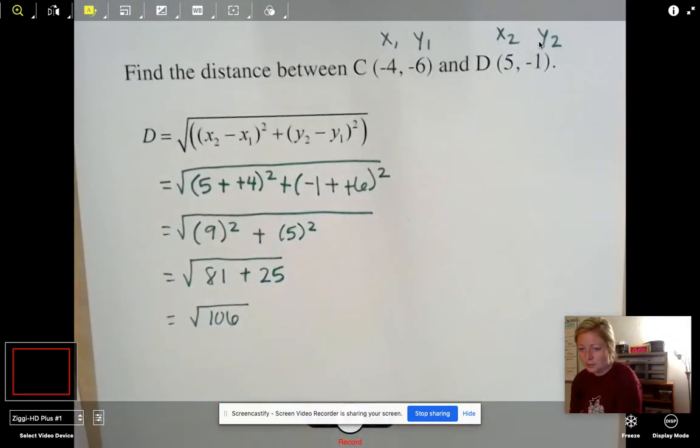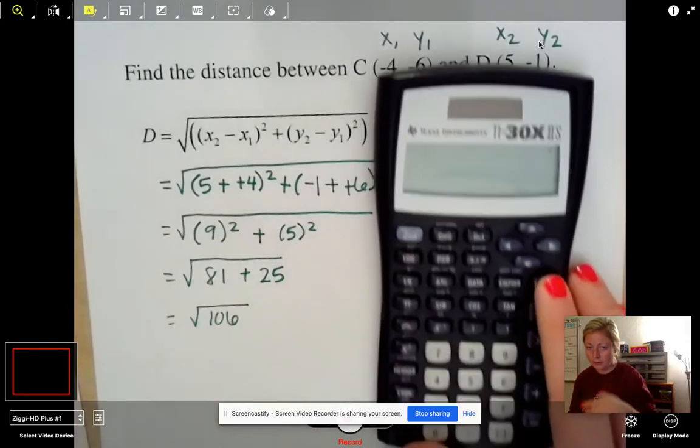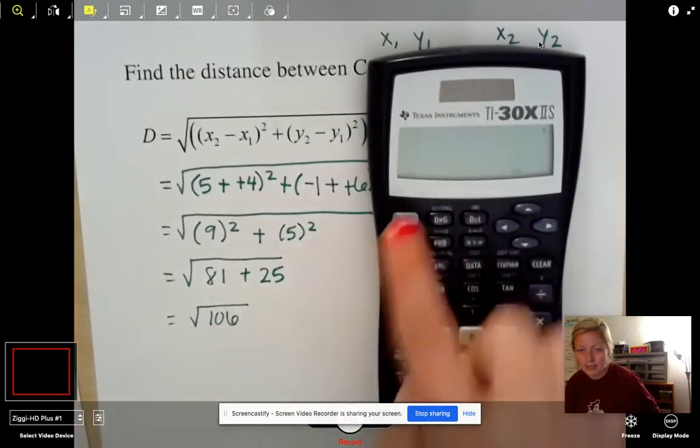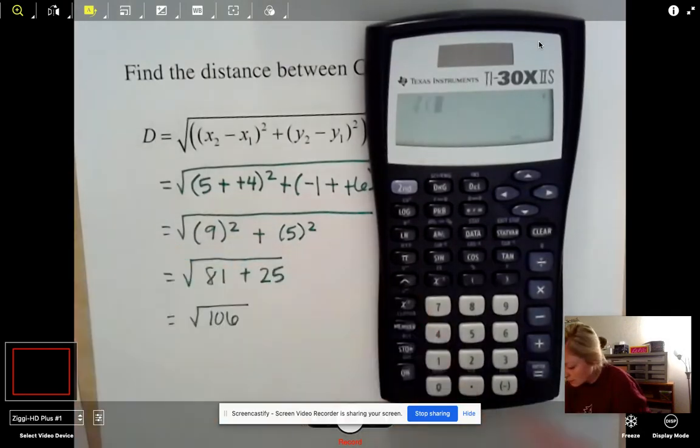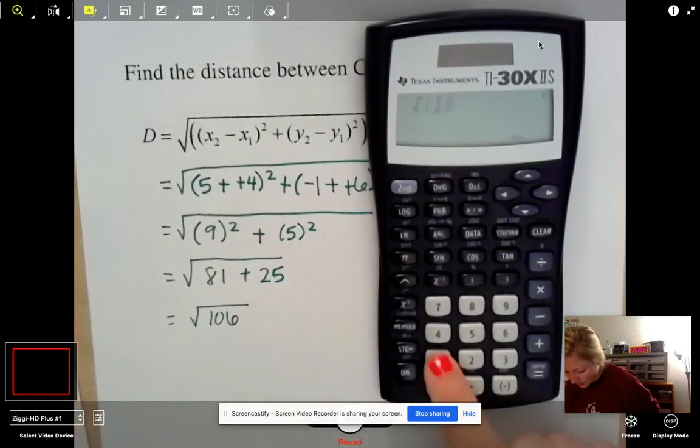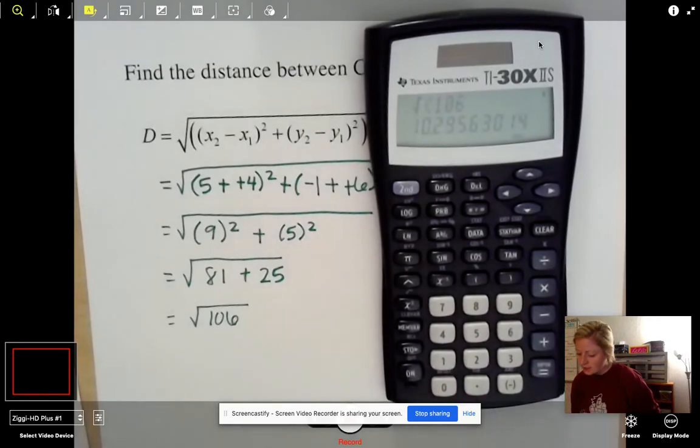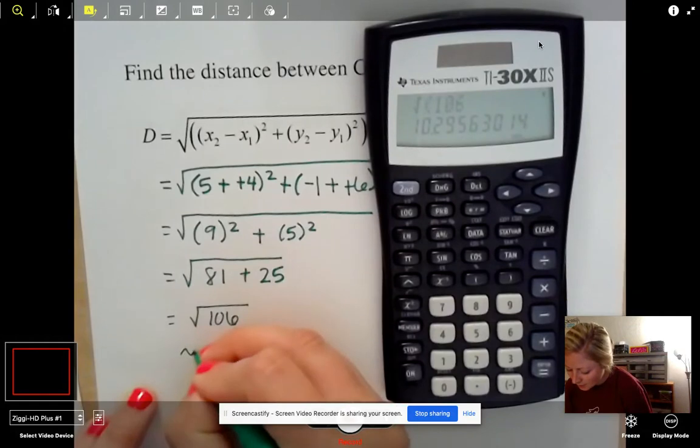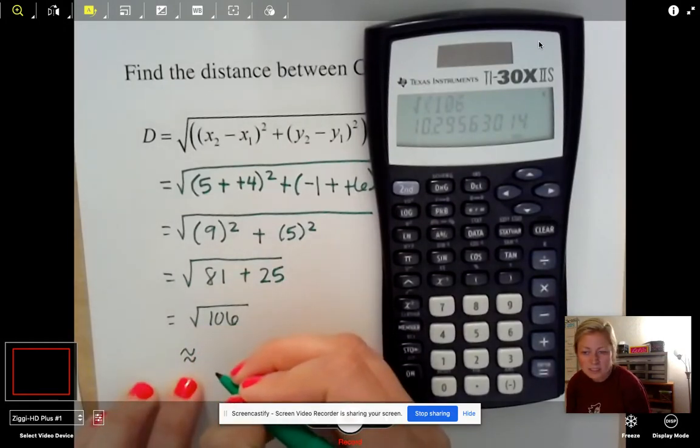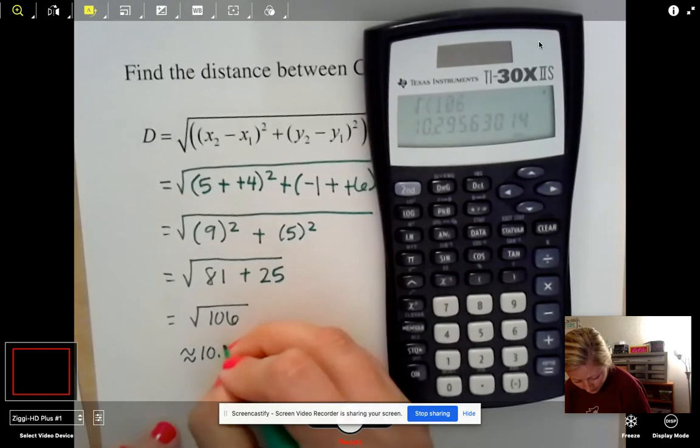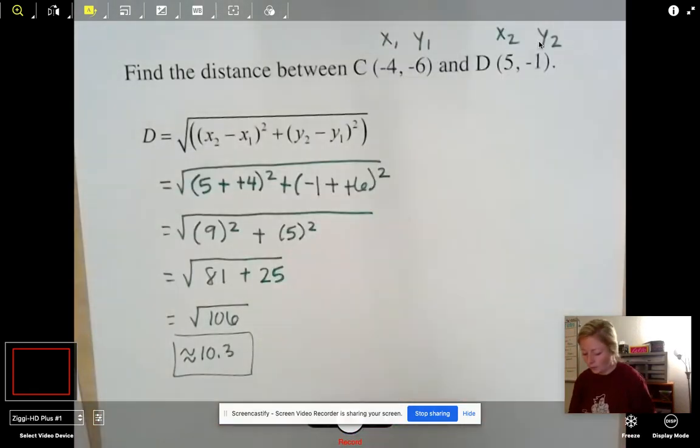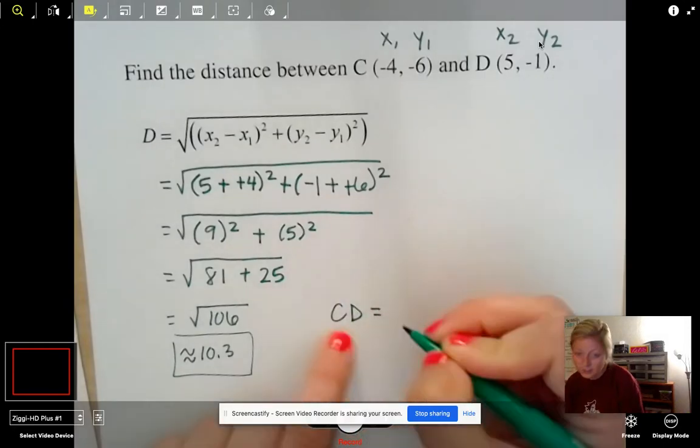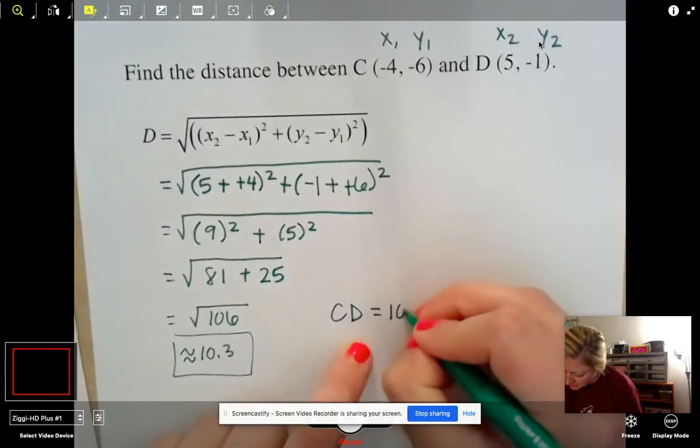106 isn't a perfect square. So again, this is where you can take your calculator. So I'll review that again. You're going to hit second. And then the X squared button, because right above it, you see the little square root. And then type in 106. And I get 10.29. Let's round to the nearest tenth. So we'll say approximately, that's what those little squiggles mean, approximately 10.3. Or if you want to be fancy, you could say CD. So the length of CD equals 10.3. Woo! We did it.